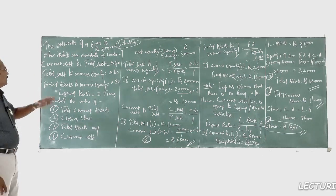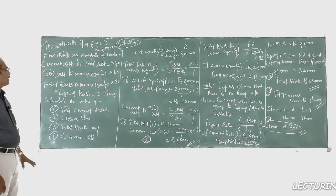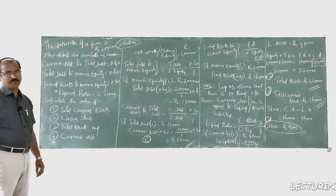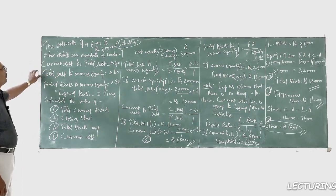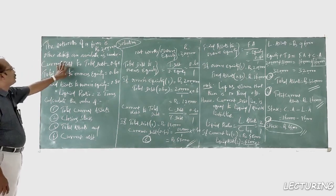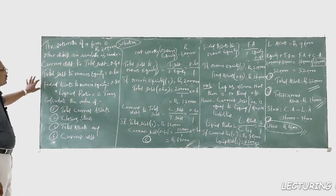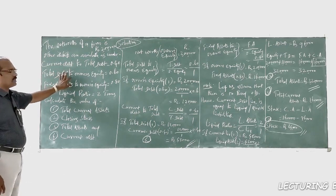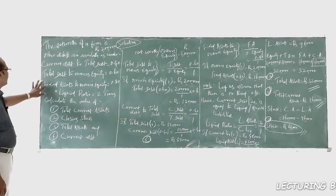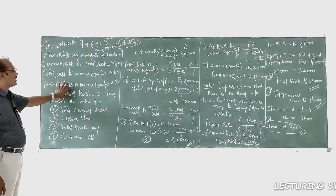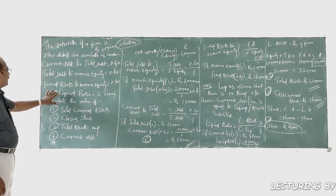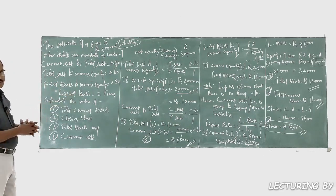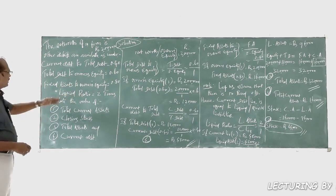Let's get into the problem. The net worth of a firm is two lakh rupees. Other details are available as under: current debt to total debt = 0.40; total debt to owner's equity = 0.60; fixed assets to owner's equity = 0.8; liquid ratio = 2 times.